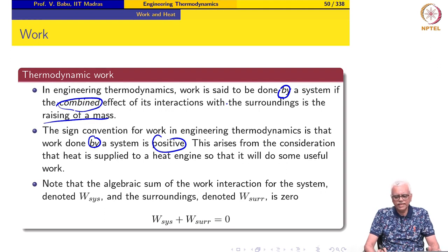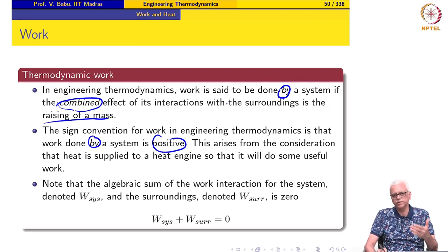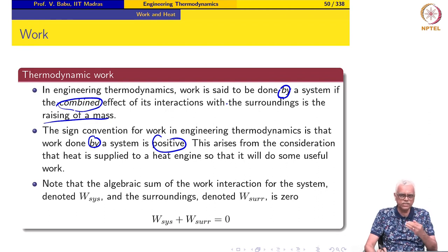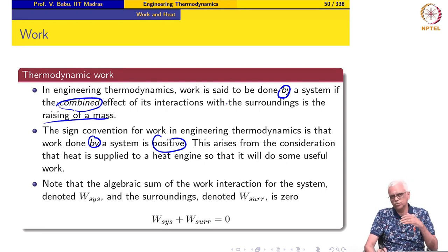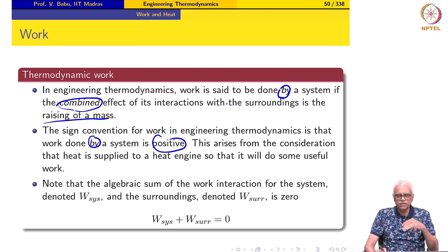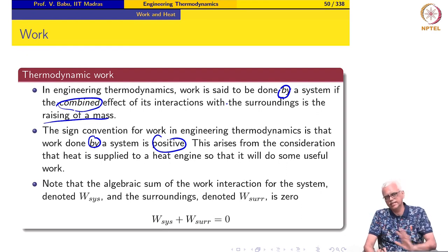We have to be very careful with the language and signs we use. When work is done on the system, based on the sign convention, the work interaction for the system is negative. It is always good practice to say 'work done by a system is 10 kilojoules' or 'work done on a system is 10 kilojoules,' rather than saying 'work done by a system is minus 10 kilojoules.'